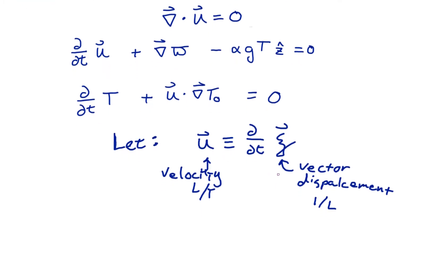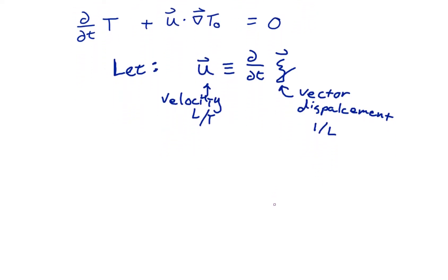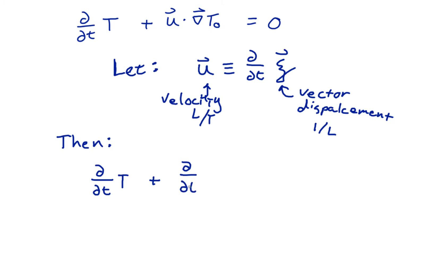So why did we do this? Well, if we introduce this new variable ξ, then let's take our buoyancy equation and see what it looks like with this new variable. Our new buoyancy equation is d/dt of our temperature plus — substituting our vector displacement identity for velocity — d/dt of ξ dotted into the gradient of t zero, all equal to zero.